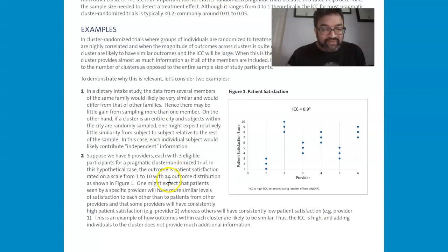So one might expect that patients seen by a specific provider will have more similar levels satisfaction to each other than to patients from other providers, and that some providers will have consistently high patient satisfaction, whereas others will have consistently low patient satisfaction. This is an example of how outcomes within each cluster are likely to be similar.